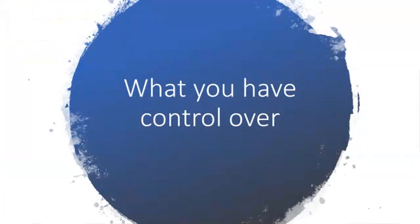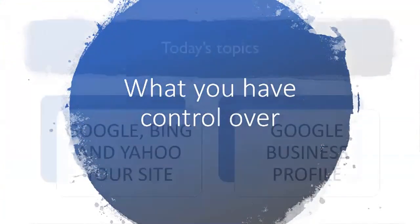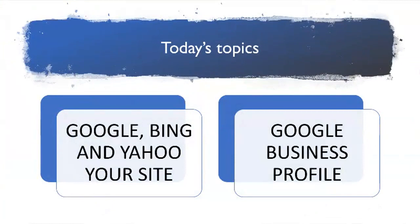Today we're going to be talking about what you have control over as far as how your Ploud site displays on the web, and what you don't have control over. In particular, we're going to be talking about how Google, Bing, and Yahoo represent your site, and we're going to be talking about the Google Business Profile. We'll be using two Michigan libraries as examples: the Buchanan Area District Library and the Reed City District Library.